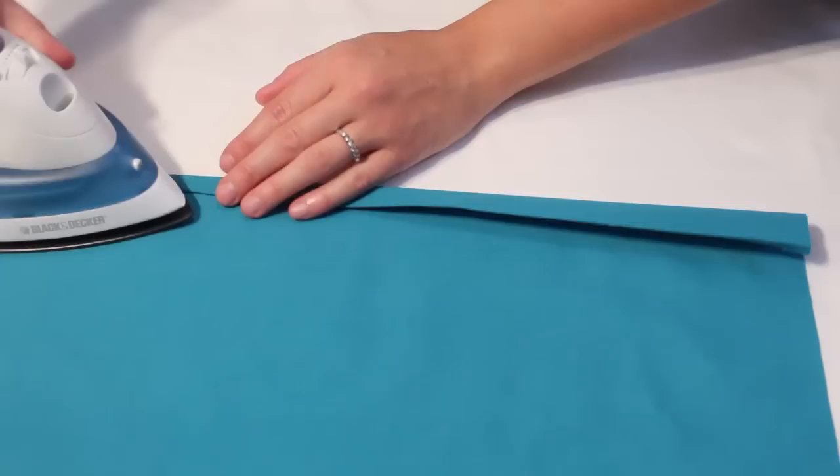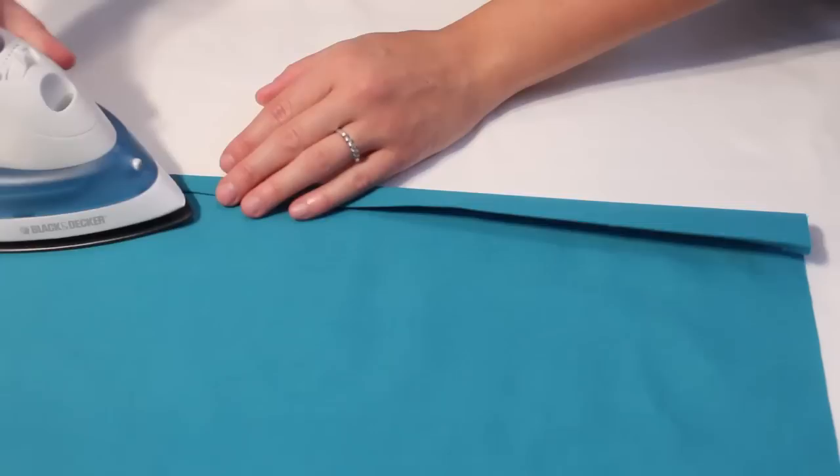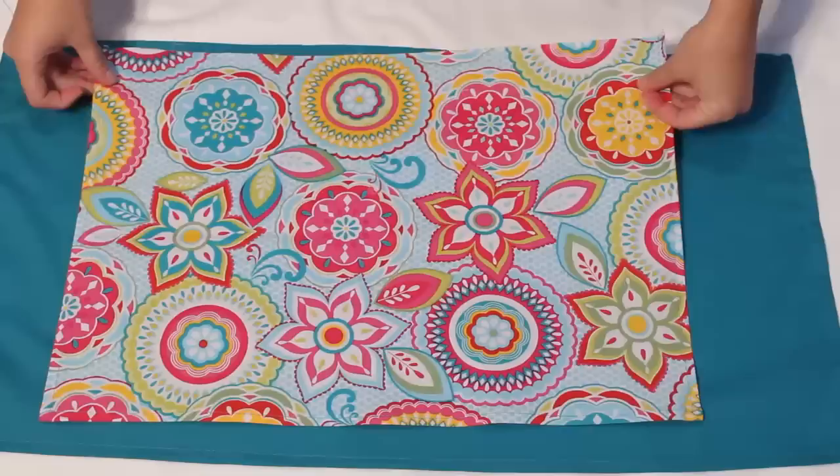Repeat for the large solid piece, both short sides and one long side. Sew the hem for the three sides on each piece.